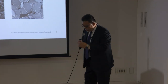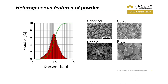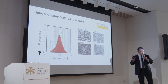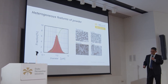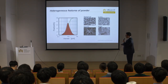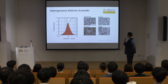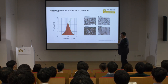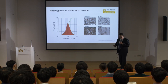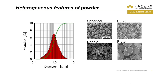In reality, the size of powder is not uniform. Powders always have a size distribution, something like this. So if you have a chance to purchase powders, you need to specify the median diameter and also the size distribution. Otherwise, you cannot get your desired product. And also, powders have different shapes, such as spherical, cubic, needle, plate, and so on. So powders are very, very complicated. We need to understand the behavior of powders; otherwise it is very difficult to process them.